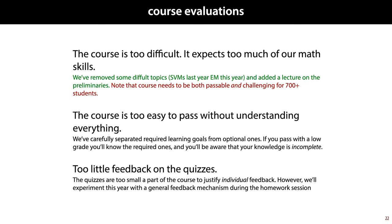On the other side, we also hear occasionally that the course is too simple. More specifically, that despite all the complicated stuff we talk about, you only really need to master a small subset of the material in order to pass. It's important to realize that this is by design — doing this is not cheating. We carefully choose a subset of the material as primary learning goals. Knowing these inside and out will get you a passing grade, and the better you know the rest, the closer you will get to a 10. This is how courses are supposed to work, especially a course like this with so many students from so many different backgrounds.